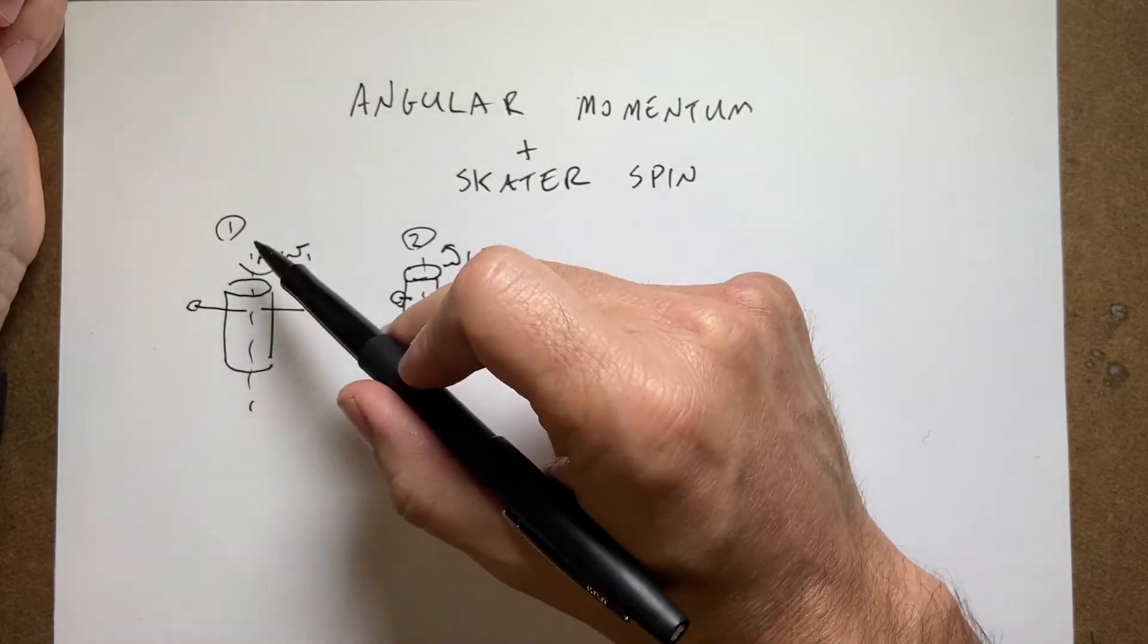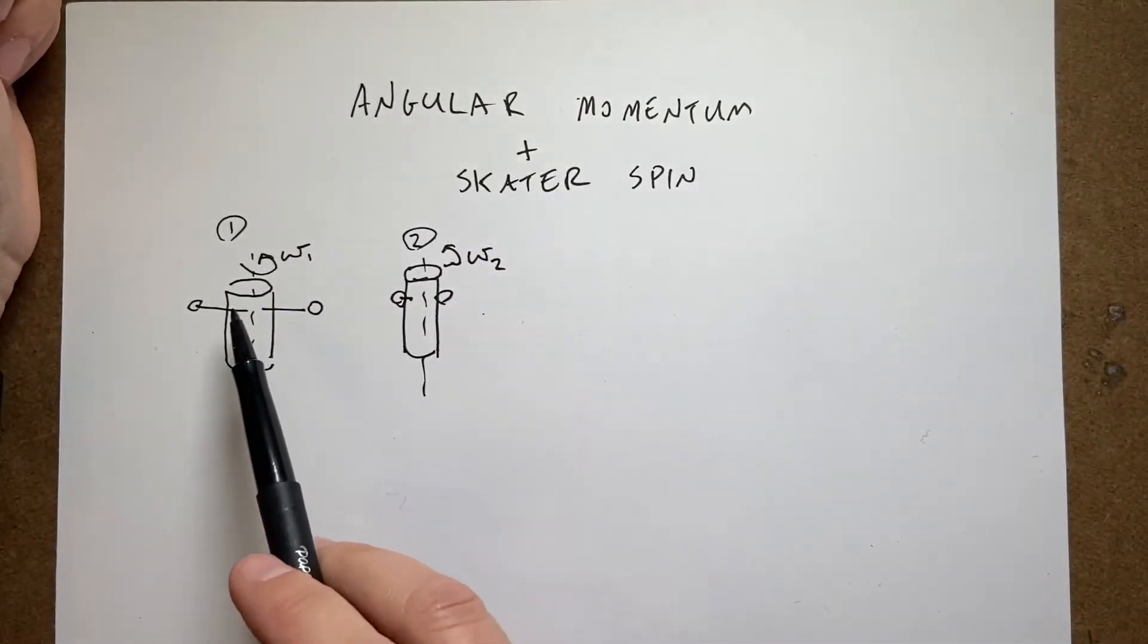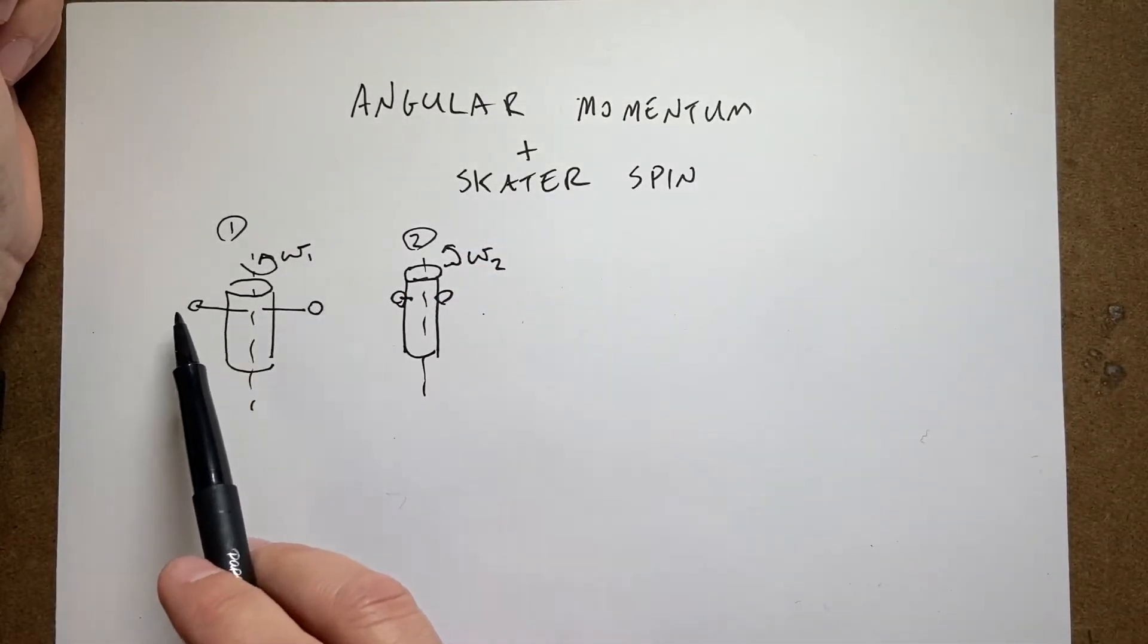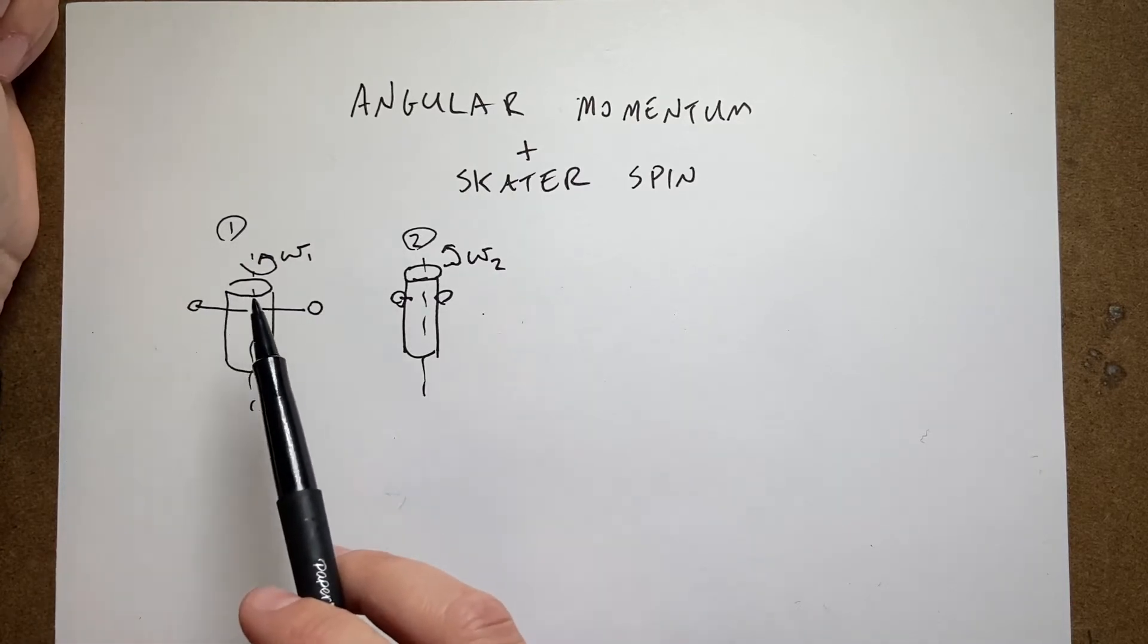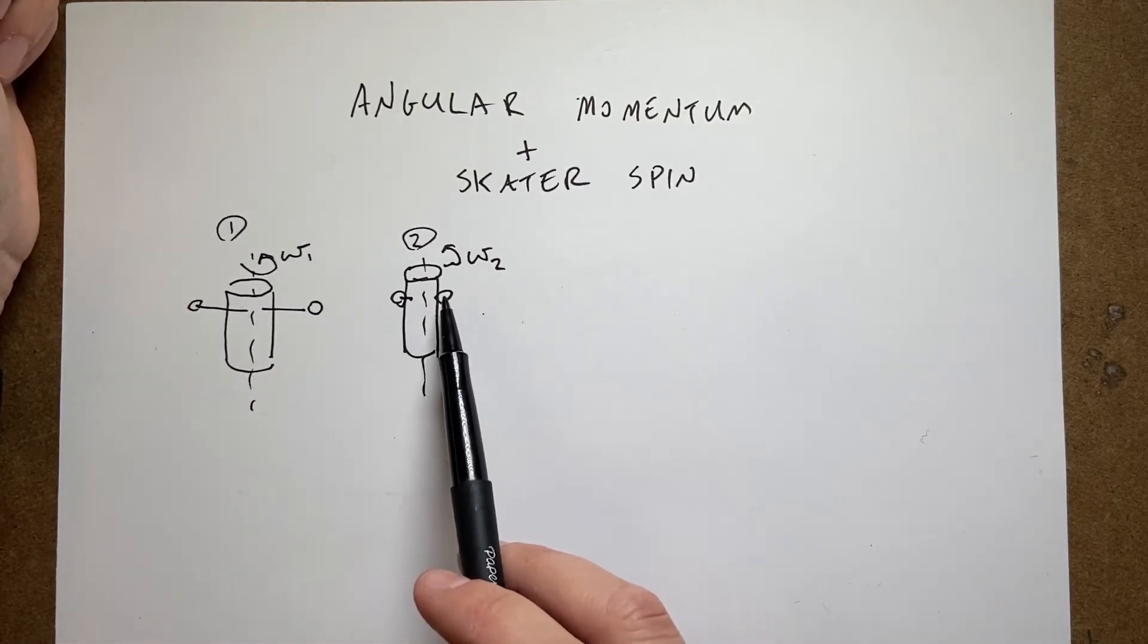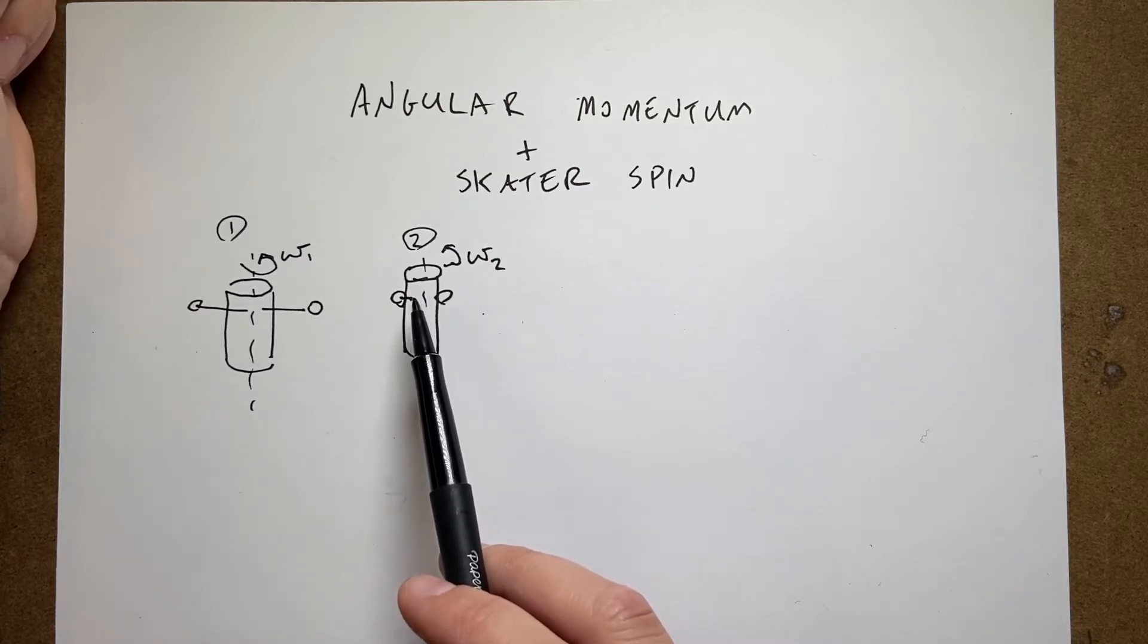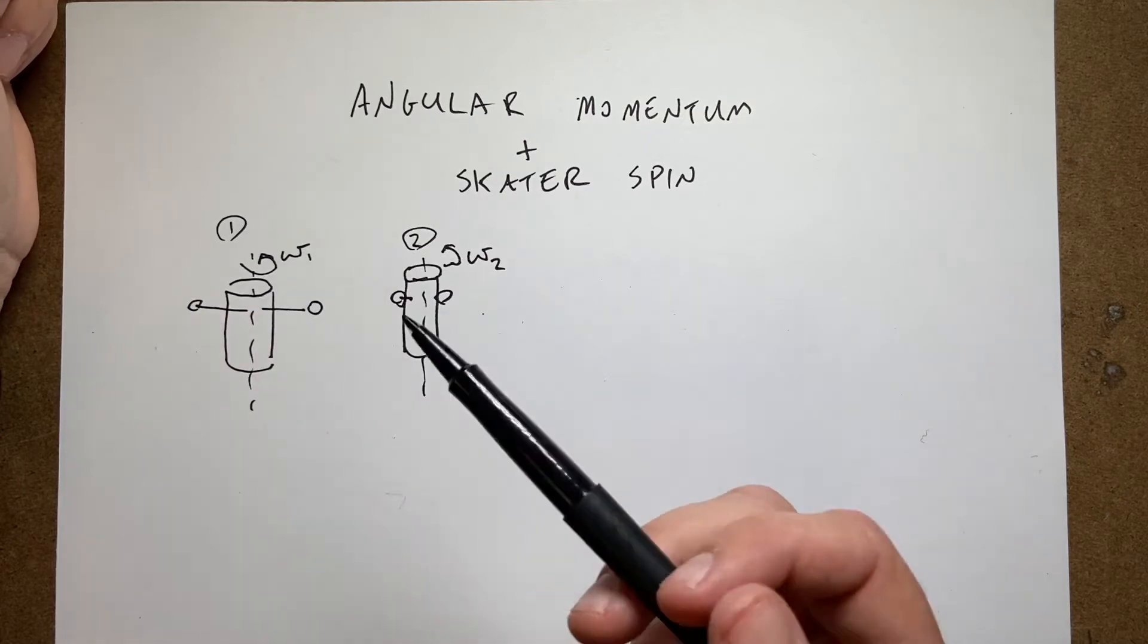So here you have an ice skater who's spinning, this is the body of the skater and the arms of the skater are stretched out like this and the skater's spinning. Then the skater pulls the hands into the body and changes the configuration, and so the question is what's the change in angular velocity.